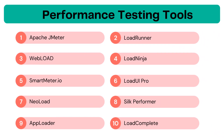Performance testing tools come in two types: open source tools and licensed tools. Some popular performance testing tools include: Apache JMeter, LoadRunner, WebLoad, Load Ninja, SmartMeter, LoadUI Pro, NeoLoad, Silk Performer, AppLoader, and LoadComplete.